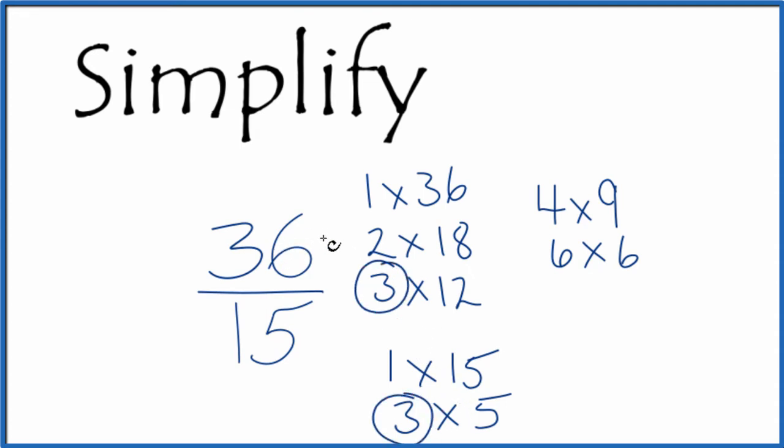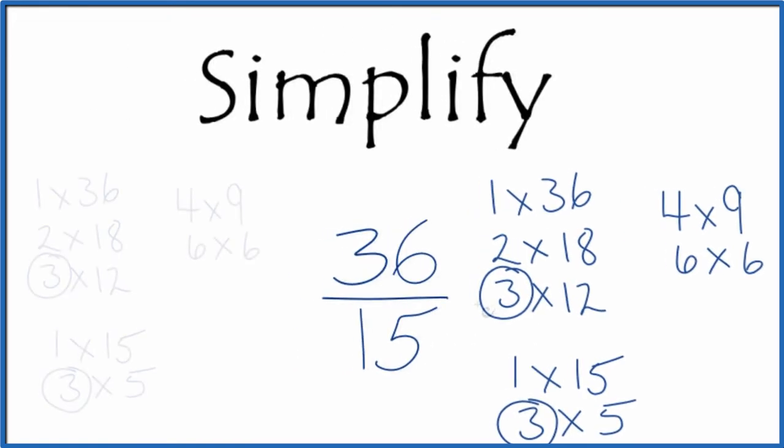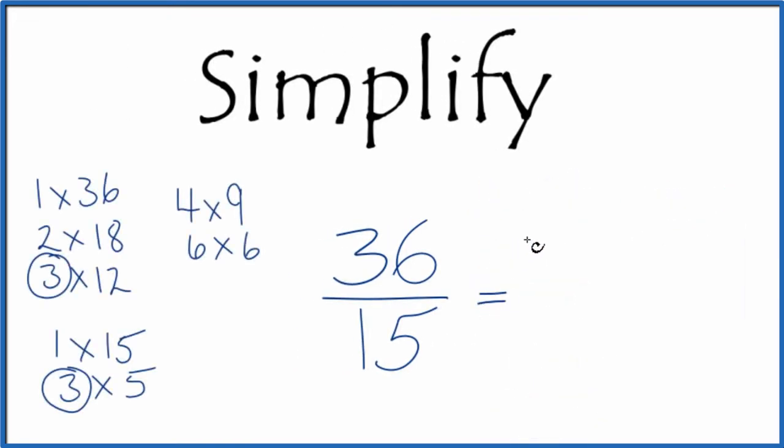So we'll divide 36 by 3 and 15 by 3. Let's think of it this way. We could say 3 times 12, that equals 36. Then we could say 3 times 5, that equals 15.